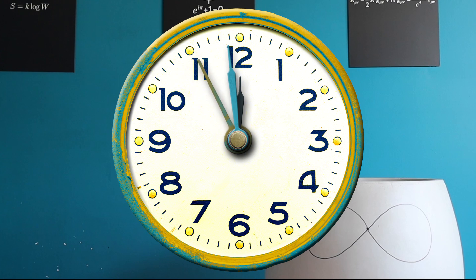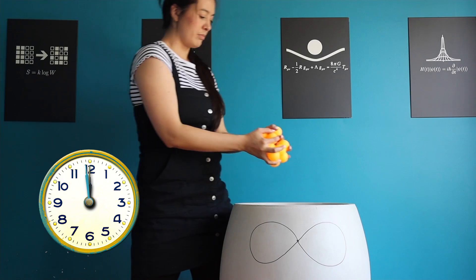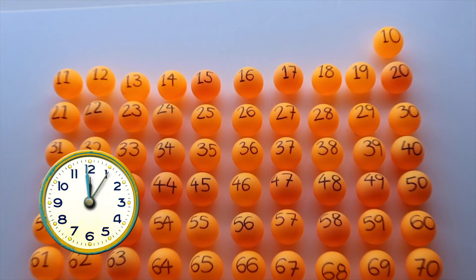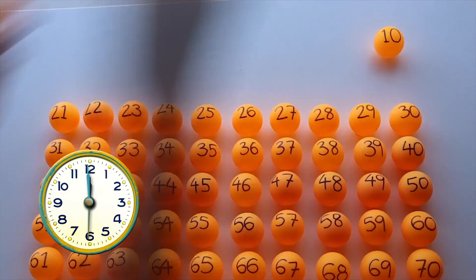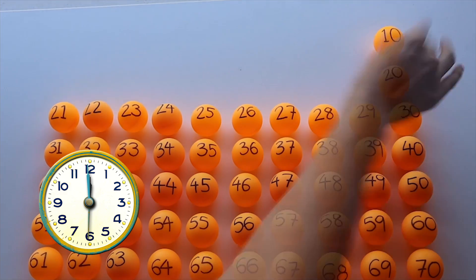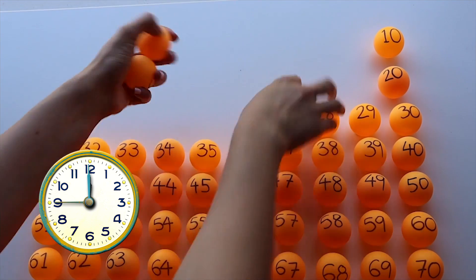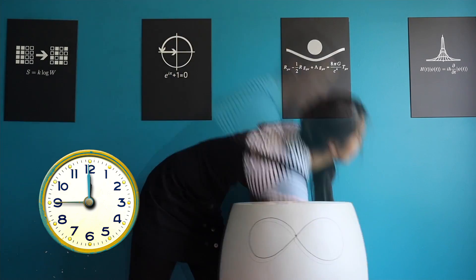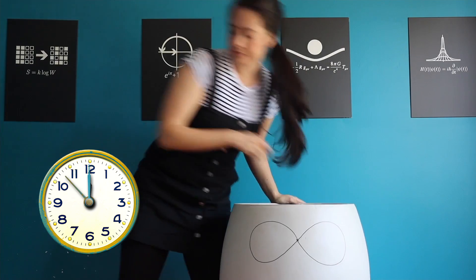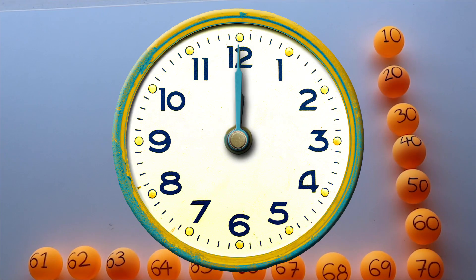The time is exactly one minute before noon. You add balls 1 to 10 and remove ball 10. At exactly half a minute until noon, you add balls 11 to 20 and remove ball 20. At one quarter of a minute until noon, you add balls 21 to 30 and remove ball 30. You keep going in this fashion, adding more balls and removing one at each time division until you reach noon.